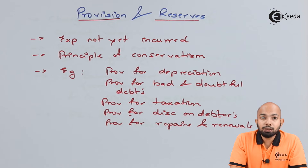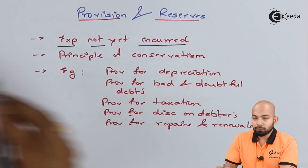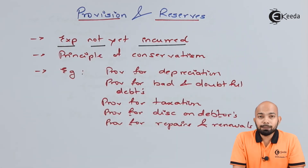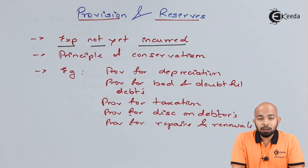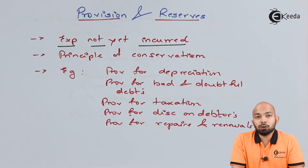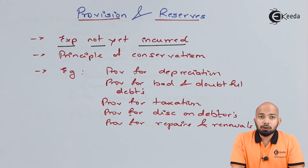We will start with provisions first. Provision is basically created for expenses which are not yet incurred. For example, we have given a loan or goods to someone on credit, and we expect that there might be a delay in payment or we might lose out on some payment. Hence, we charge that specific amount to our profit and loss account for the current year.